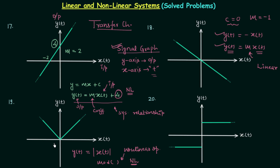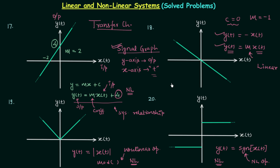So the system in problem 19 is non-linear. In problem 20 we have another specific transfer characteristics from which we can say y(t) = sgn(x(t)) — the signum function — which is also a non-linear operator. Therefore the system in problem 20 is also non-linear. From the next lecture we will start the new classification: invertible and non-invertible systems.